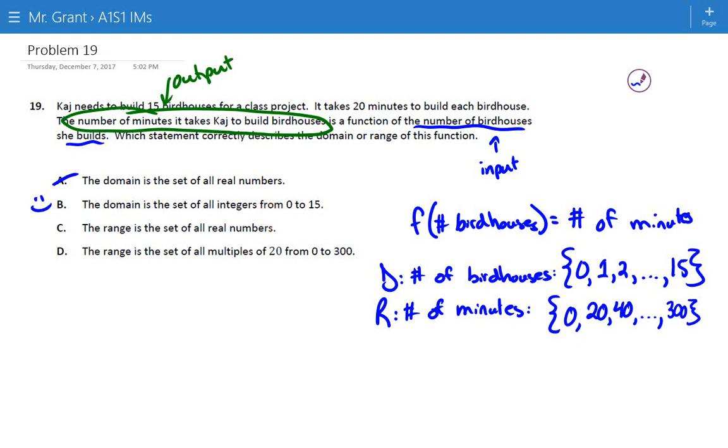C says the range is the set of all real numbers. Well, our range is not all real numbers. Our range is actually multiples of 20, right? 0, 20, 40. There's no decimals, no fractions. There aren't even any odd numbers in here. So our range is definitely not every number.